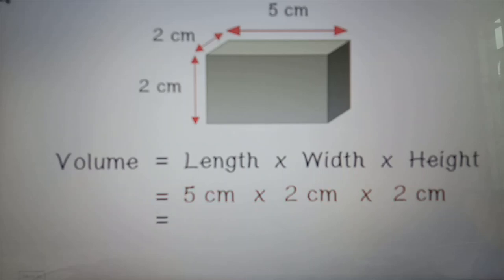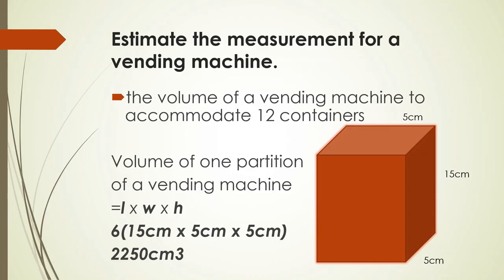We use the measurement of a cuboid to measure the volume of a container. Volume of a container equals length times width times height. So 15 centimeters times 5 centimeters times 5 centimeters. Volume of a container equals 375 cubic centimeters.